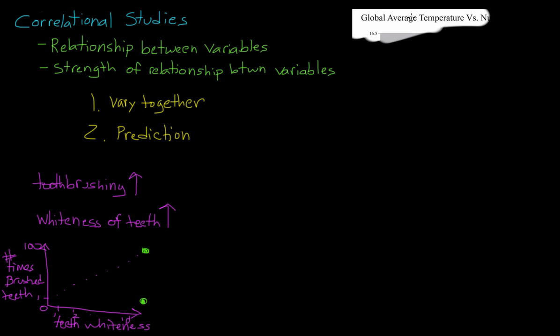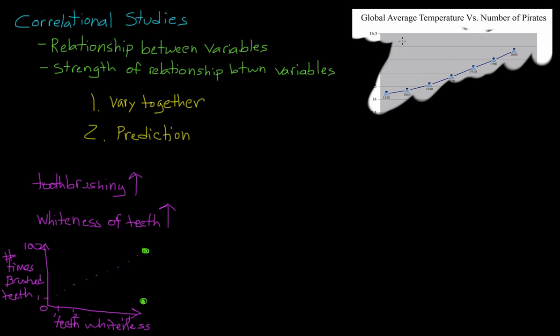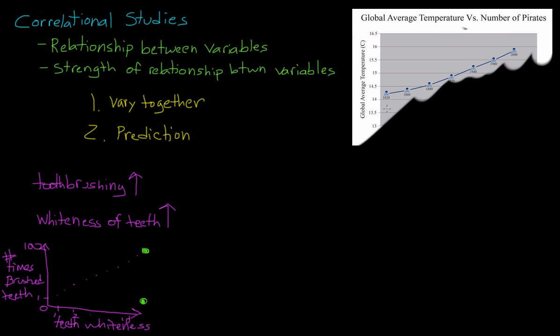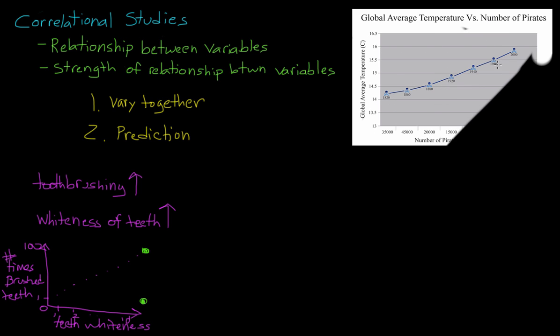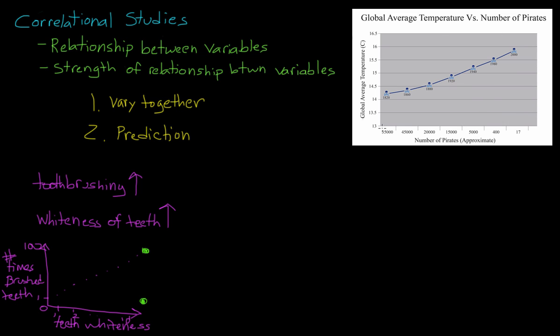I present to you the famous internet graph of global average temperature versus number of pirates. As you can see, as global temperature increases, we see a decrease in the number of pirates. Notice how instead of having zero on this side, here we have zero on this side, so the numbers are increasing as we move to the left.